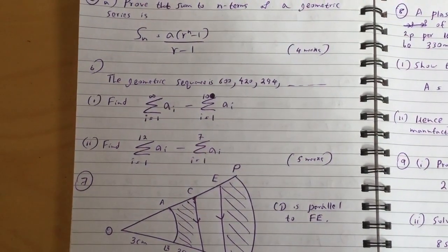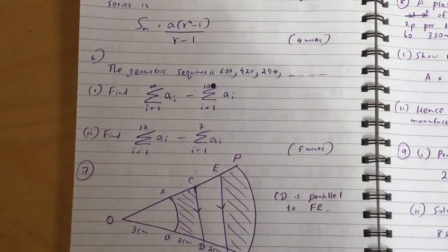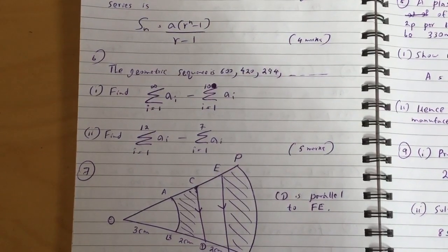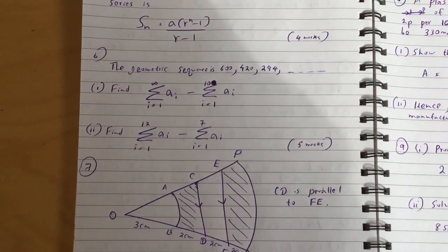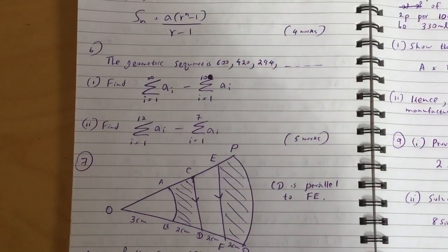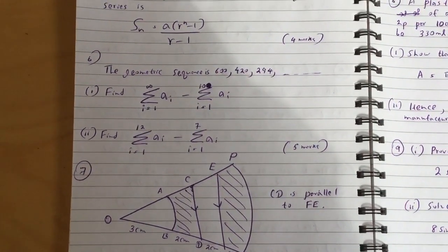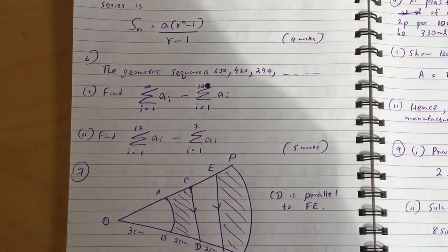Part B: the geometric sequence is 600, 420, 294, etc. Question one: find sum of i equals 1 to infinity of a_i minus sum of 1 to 10 of a_i. It's 1 to 10 guys, not 1 to 100.